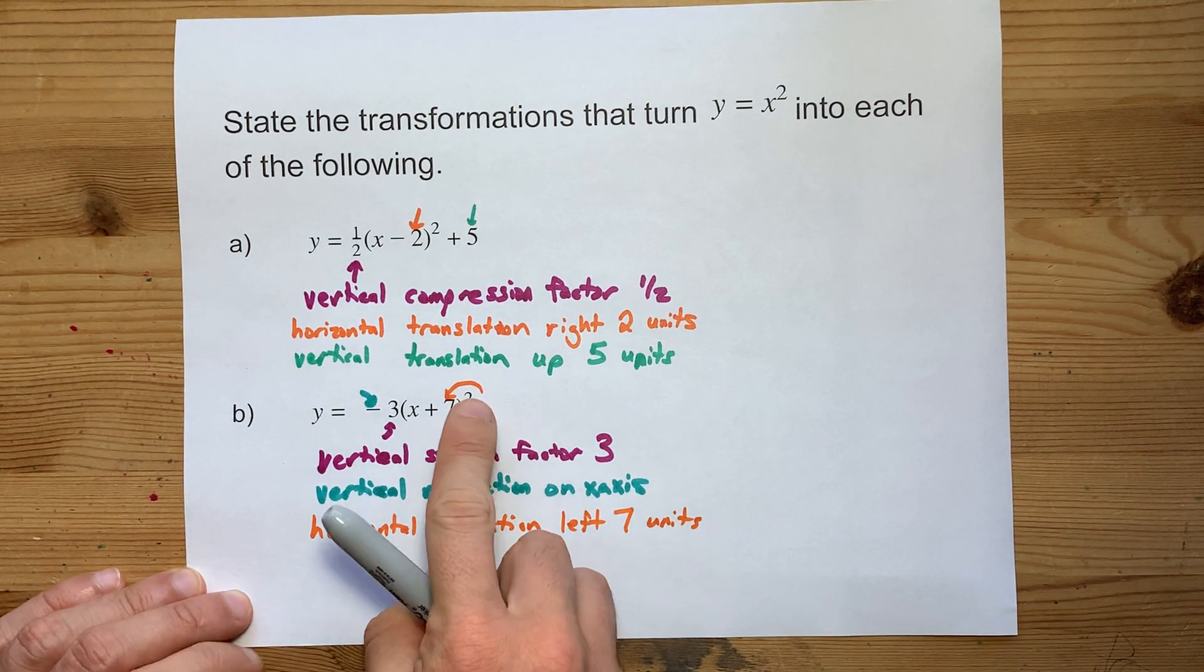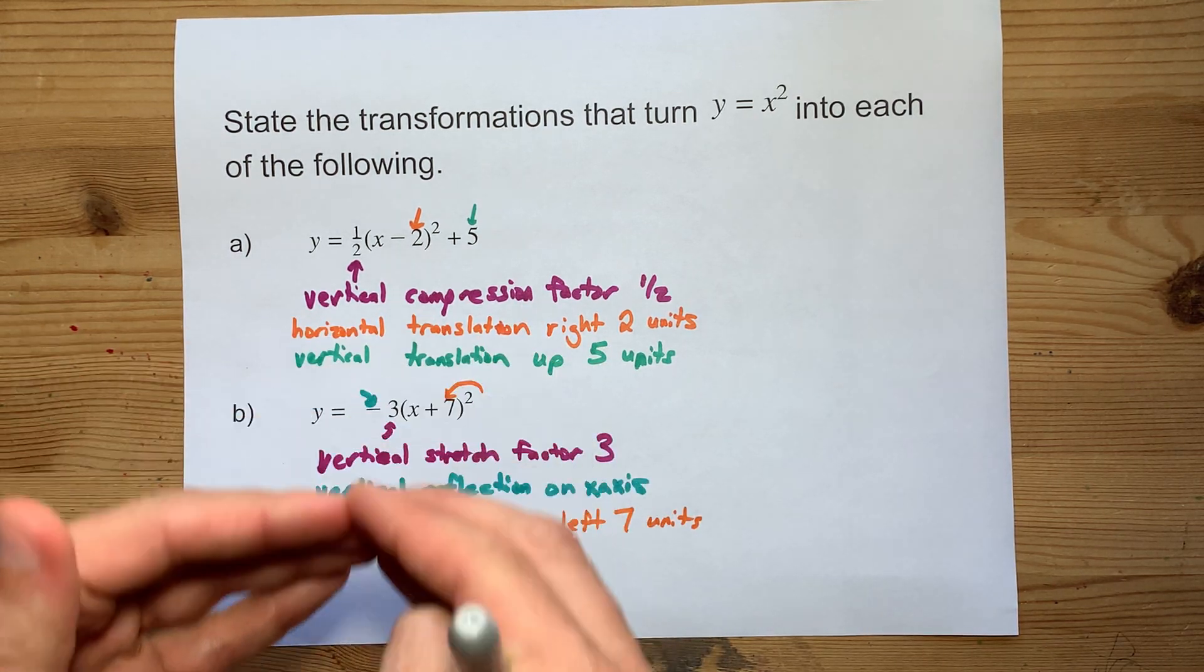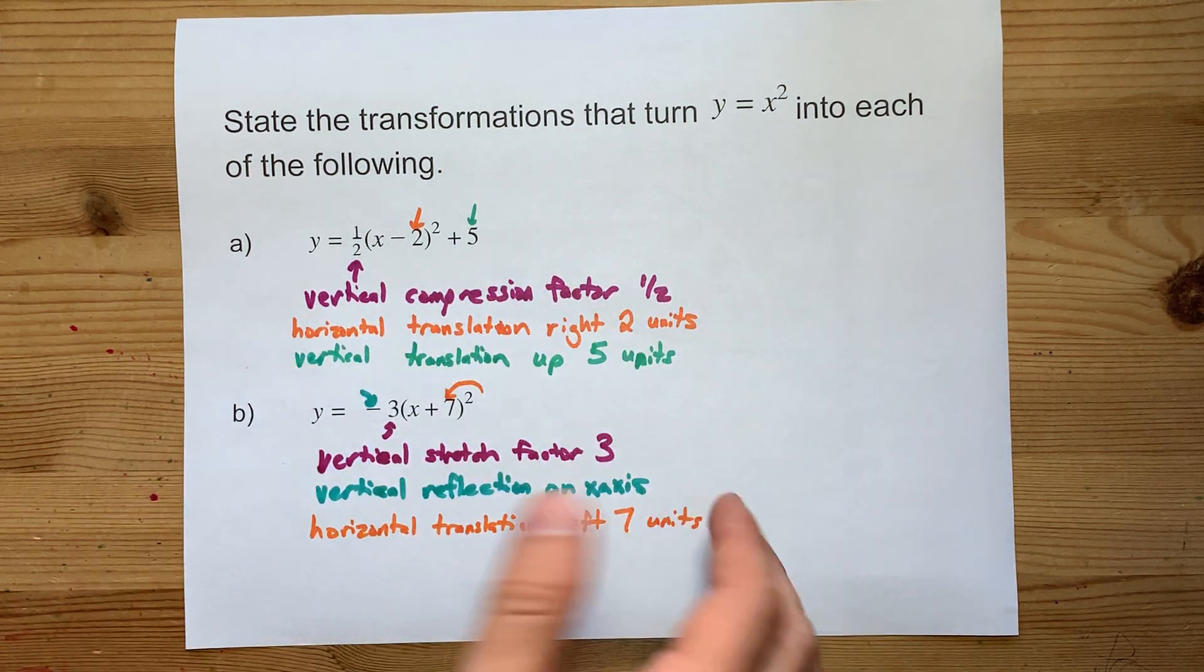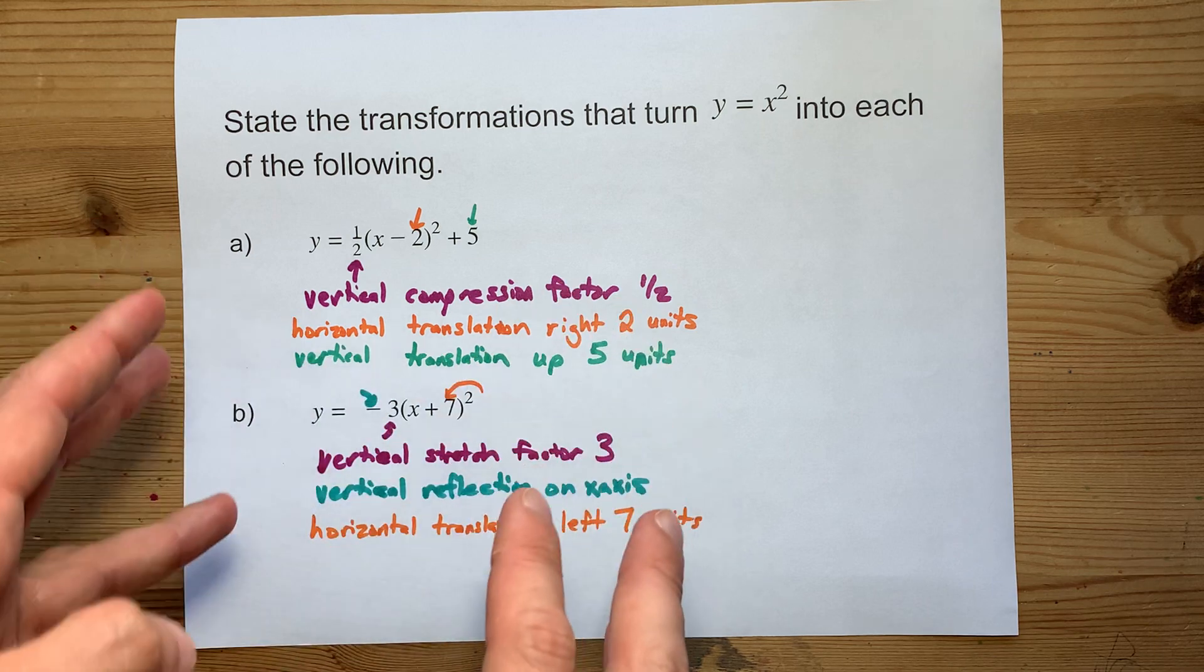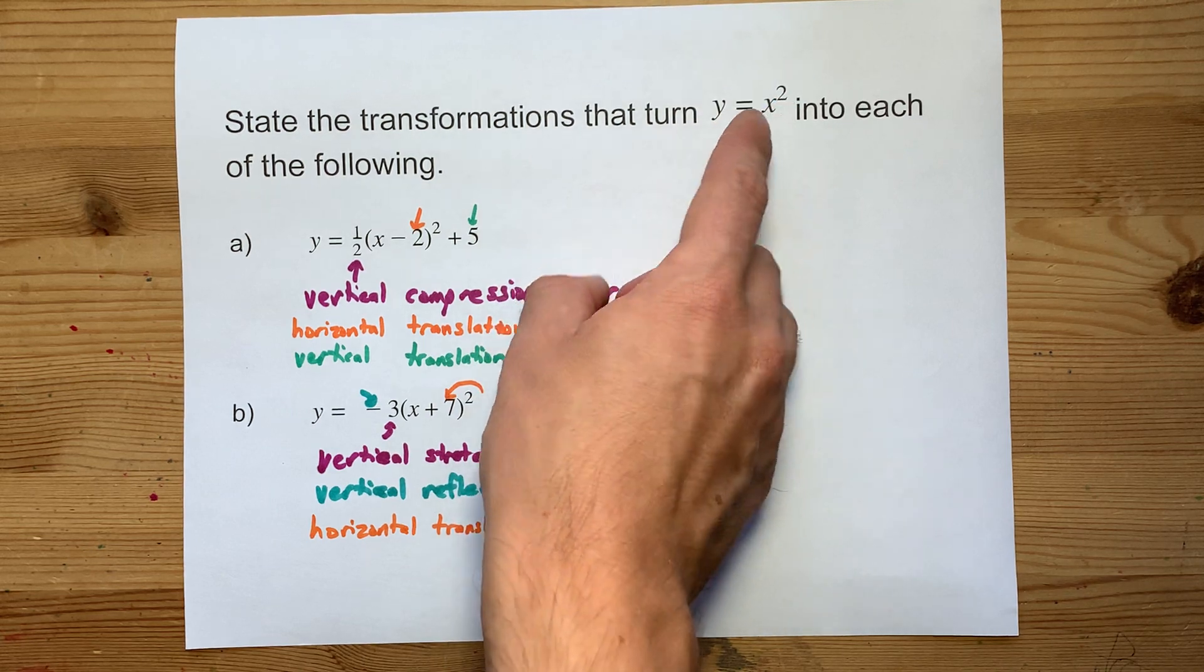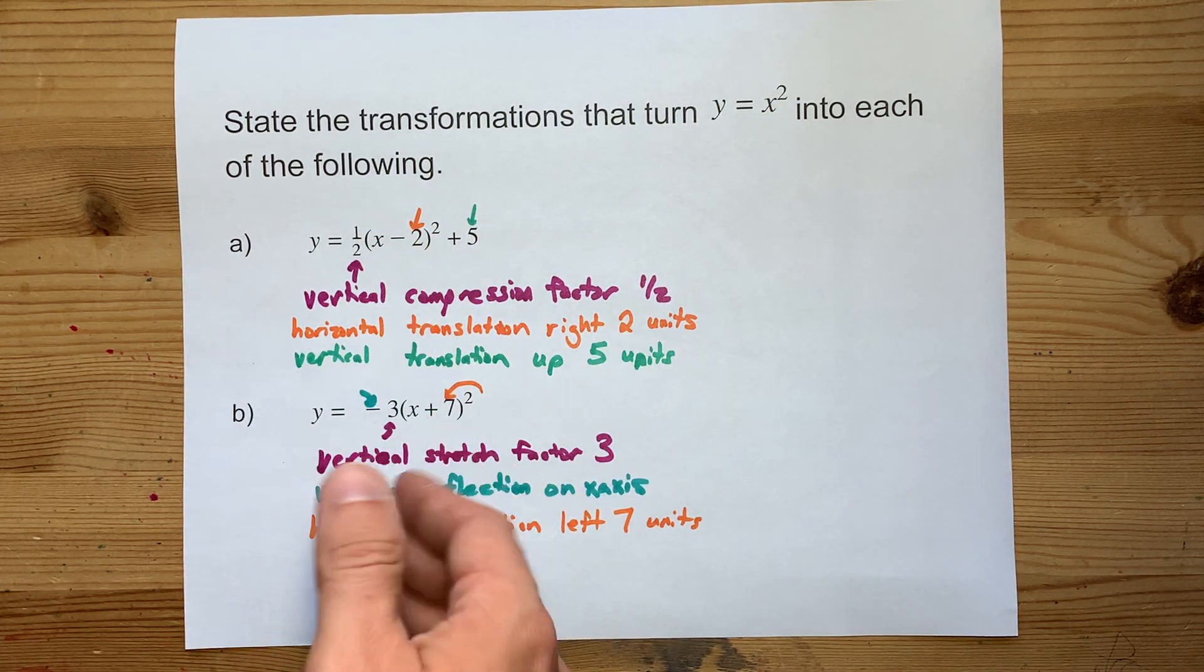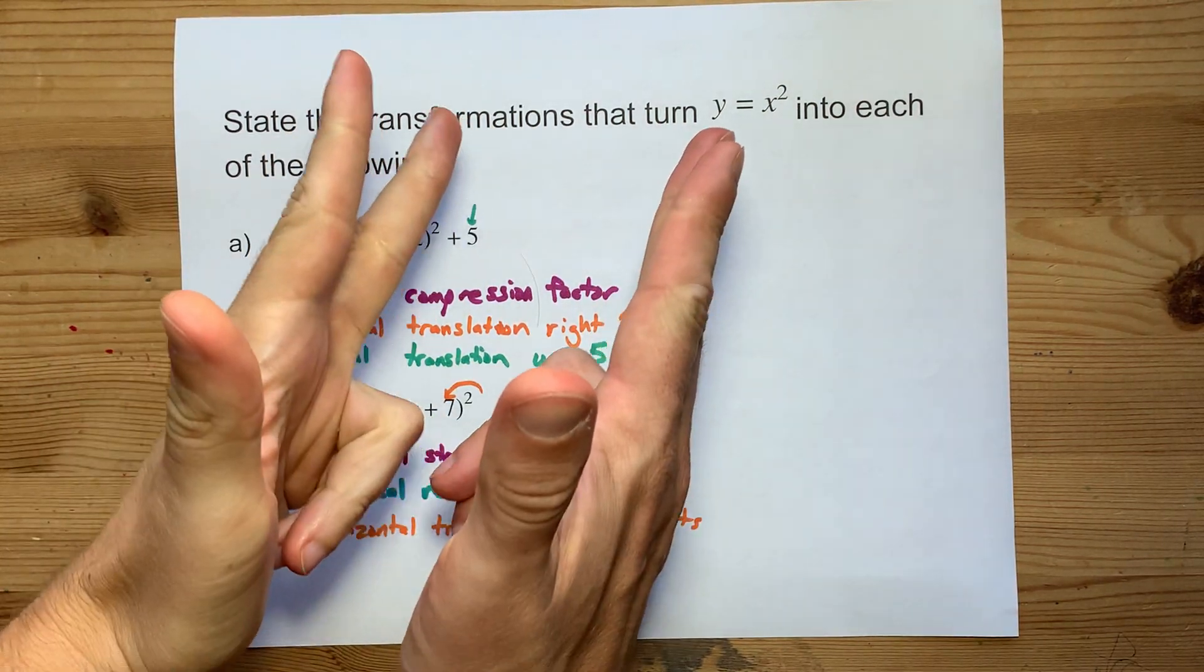Now, there's nothing added or subtracted from the end here. So, there's no vertical translation like I had written in green above. So, congratulations. You've now encountered all of the possible permutations for what the transformations could be when you turn y equals x squared, the base parabolic function, into another kind of vertex form parabolic function. Best of luck.